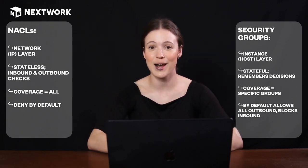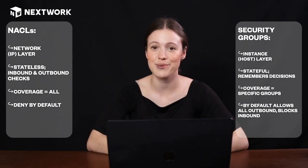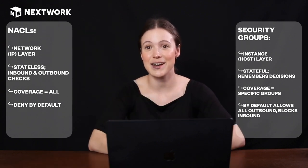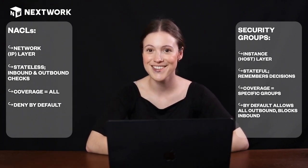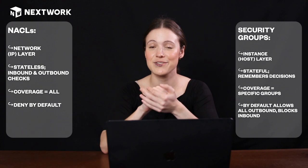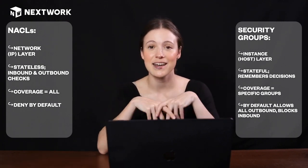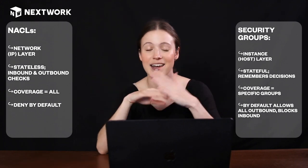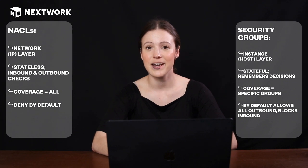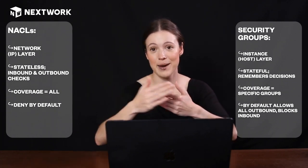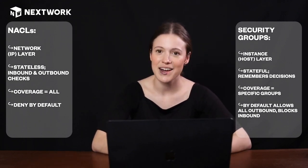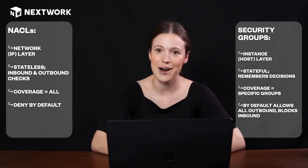Coverage-wise, access lists apply to everything going into a particular virtual private cloud, whereas security groups are just for that one instance. Access lists have an explicit deny by default rule — they have a list of criteria, and if a packet doesn't meet that criteria it's denied straight away. Security groups, by default, check all incoming traffic but allow all outgoing traffic, though you can update this.